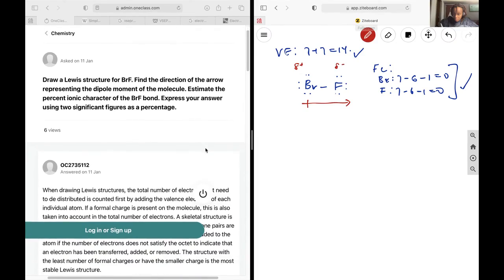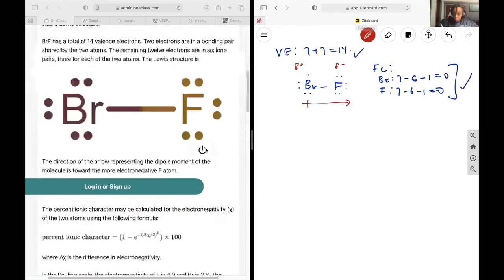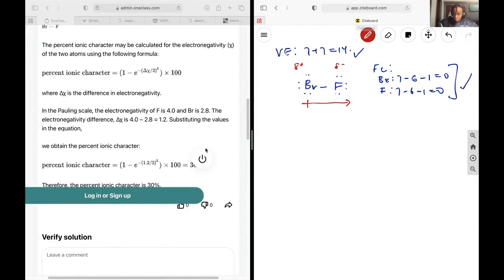Now, I am told to estimate the percent ionic character, there's a formula for that, so my percent ionic character is going to be 1 minus e to the power of negative the difference in electronegativity over 2 squared, and then by 100, because it's a percentage. And so that is going to be, first you need to find the difference in electronegativity.